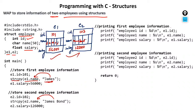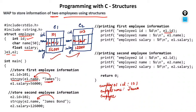Now we are printing those values. For the first employee: 'Employee 1 id:' — e1.id is 101. 'Employee 1 name:' — e1.name is James. 'Employee 1 salary:' — e1.salary is 56,000 (since it's float you will get some decimal zeros). Similarly, you will get the second employee's information from e2. This covers the memory structure of this structure program and how it works.